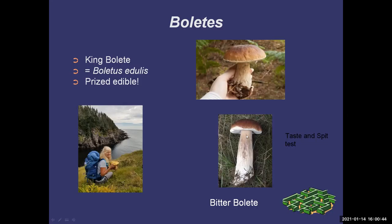This is something that will trick many mushroom hunters — it's a bitter bolete. It can look very much like the porcini. But porcinis or king boletes have white netting near the cap, while bitter boletes — Tylopilus felleus — have brown netting. Another way to tell them apart is that they taste bitter.